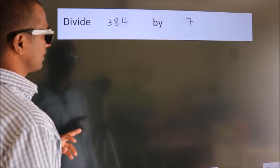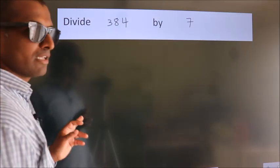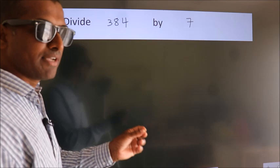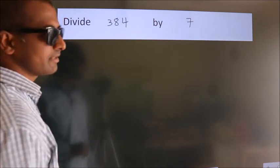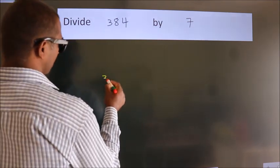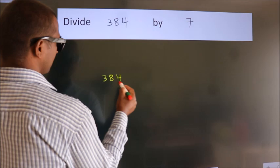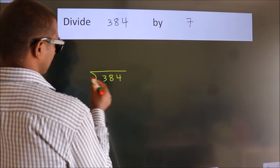Divide 384 by 7. To do this division, we should frame it in this way. 384 here, 7 here.